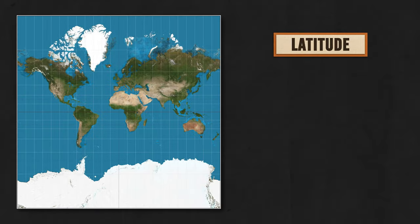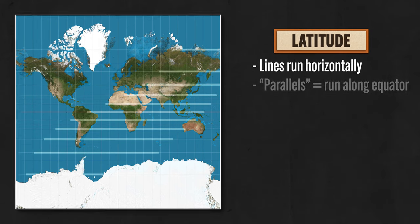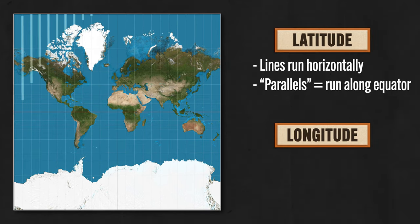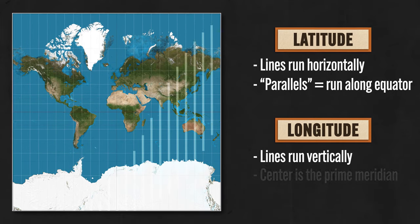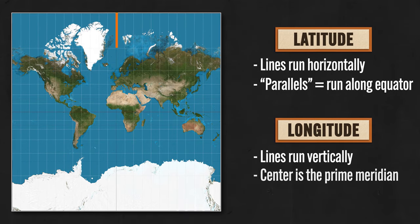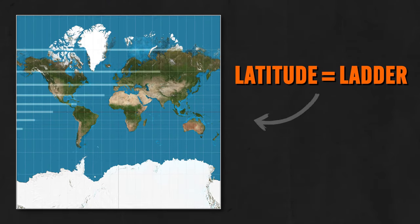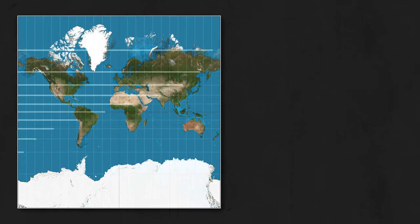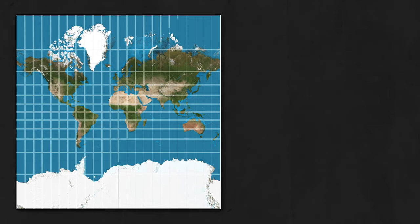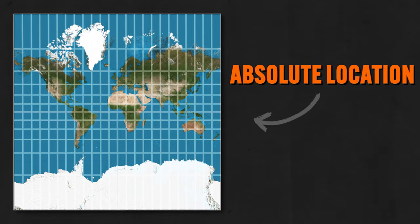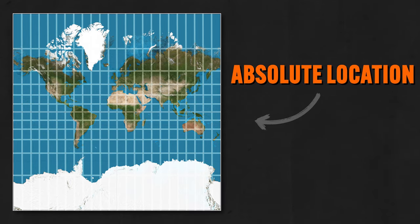Latitude lines run horizontally, and sometimes they're called parallels because they run parallel to the equator at the center. Longitude lines run vertically, and their center is called the prime meridian, which runs through Greenwich, England. If you have trouble remembering which is which, think of latitude like a ladder — latitude, ladder — you just climb right up it. Together, longitude and latitude lines form a grid overlaying the entire Earth, making it possible to determine the absolute location of any place.